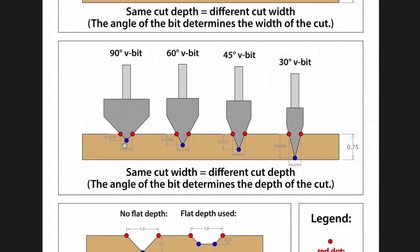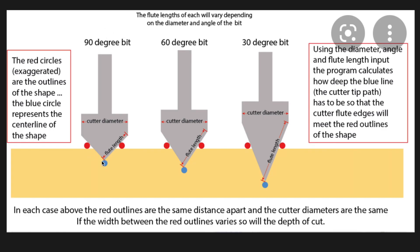Going back to the diagram, the red dots are the edges of the vectors — the edges of the letter. The edges of the vectors are not changing; the red dots are in the same location for each V-bit. Since the 90-degree V-bit is the widest, it has the shallowest cut because it did not have to carve as deep for its edges to meet the edges of the vector. As we progress down to the 30-degree V-bit, the V-bit has to carve deeper to allow its edges to meet the edges of the vector. The takeaway: the angle of the V-bit determines the depth of the cut, and this is calculated by the program. The wider the angle, the shallower the carve; the shallower the angle, the deeper the carve.